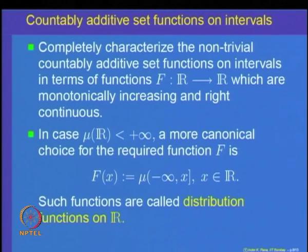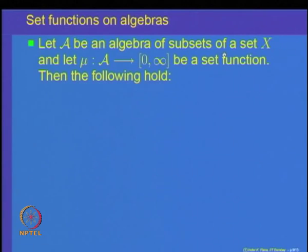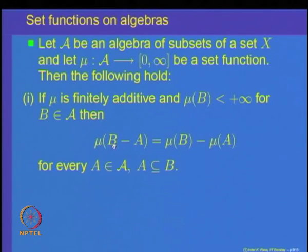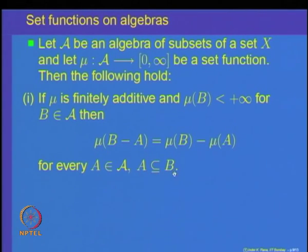Next, we will study set functions on a general class of sets called algebras. Let A be an algebra of subsets of a set X, and mu a set function on this algebra taking non-negative real values. We want to show: if mu is finitely additive and mu of B is finite for a set B in the algebra, then mu of (B minus A) equals mu(B) minus mu(A), whenever A is in the algebra and A is a subset of B.